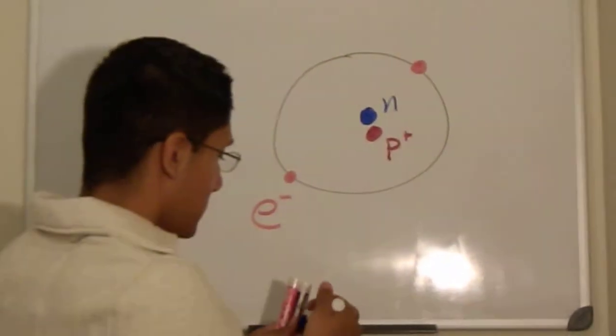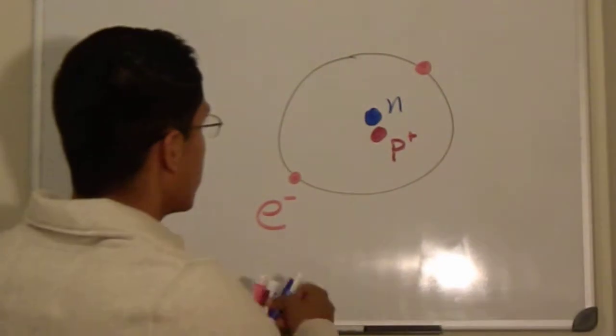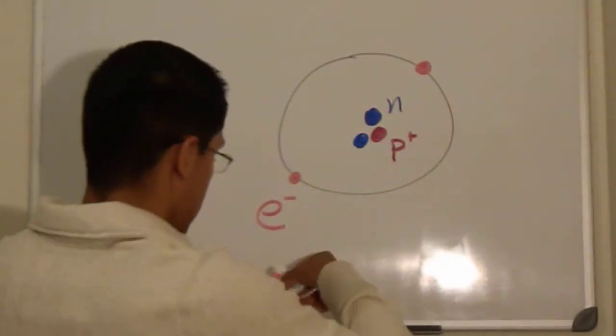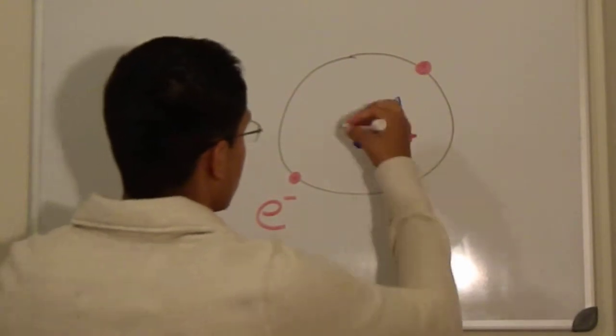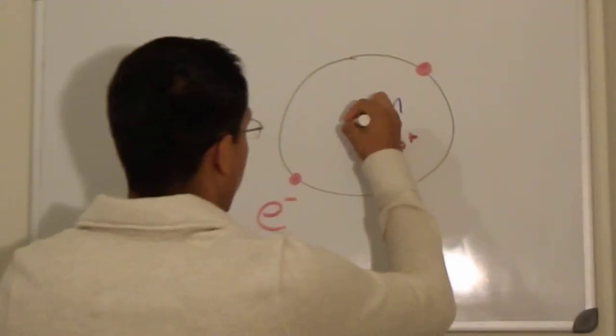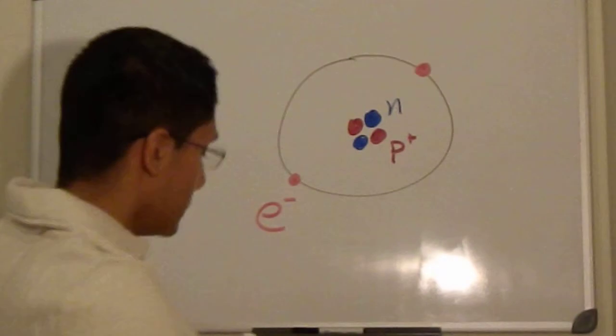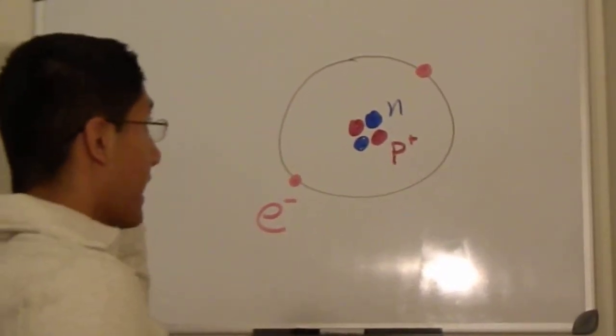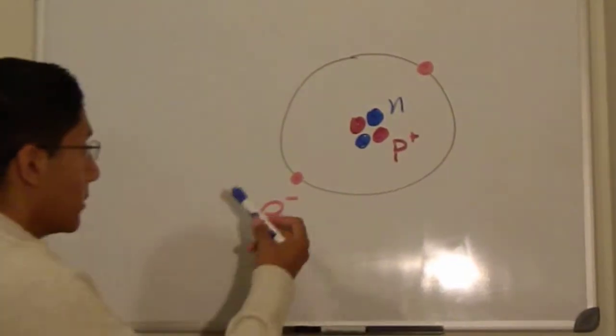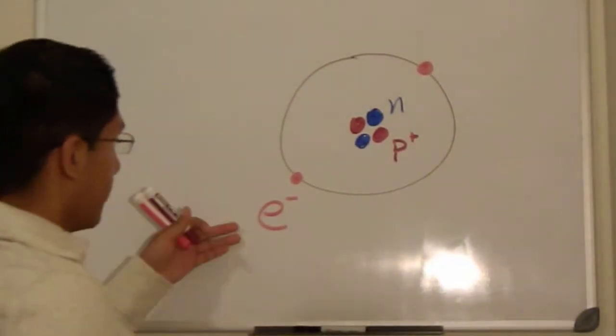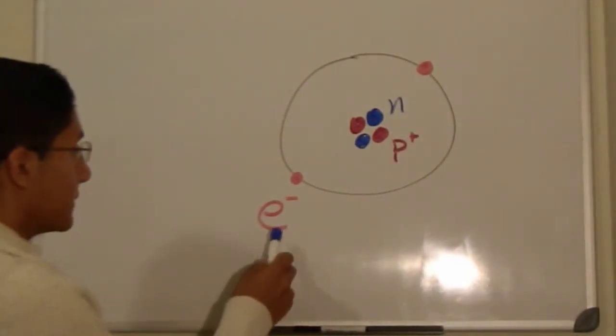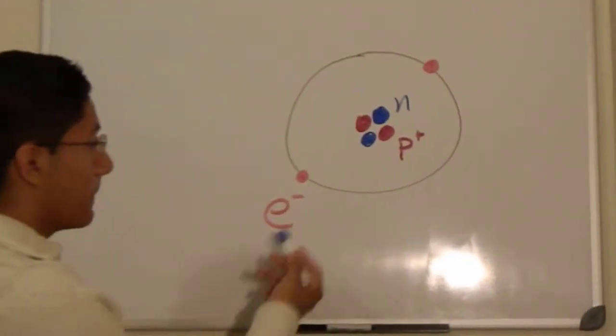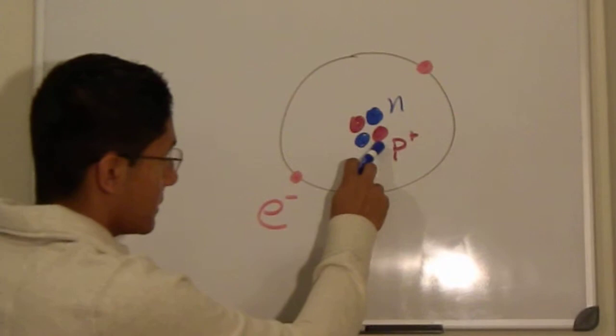Let me actually draw these other two. Okay, so now this is the basic model that we have for the atom. We have here the electrons, they're negatively charged subatomic particles. The purple are the protons, positively charged.